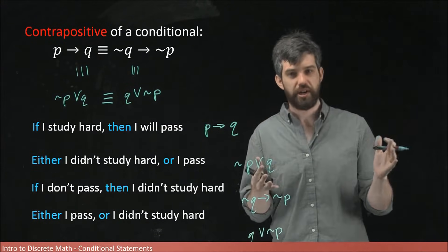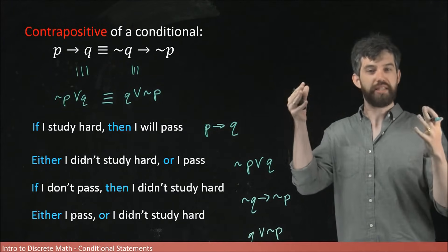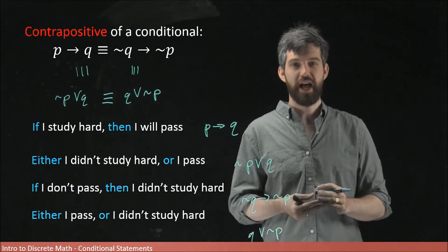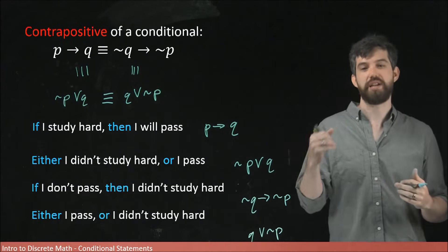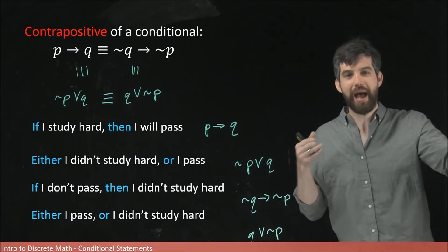Now, the important point here is that all four of these different sentences are logically the same thing. They mean precisely the same claim that there's this sort of initial thing, that's the studying hard. And the studying hard results in this sort of future thing, the passing.